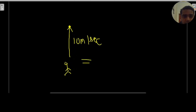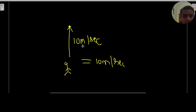The answer is that the velocity will be the same — 10 meters per second — because the object was thrown vertically upward and will return with the same speed. Since air resistance is neglected, whatever velocity it went up with, it comes back with the same velocity under gravity. This type of question is also asked in the IMCAT exam.